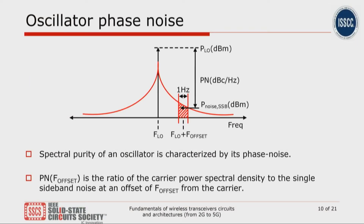One of the key contributors to noise degradation in both the transmit and the receive chain is the oscillator. In an ideal oscillator, the frequency spectrum should look like a single tone at the oscillation frequency, and the zero crossings should appear at an exact time period. However, noise in the oscillator results in random fluctuations in the zero crossings, also known as jitter in the time domain. In the frequency domain, this translates to a spreading in the frequency spectrum of the oscillator. The phase noise is defined at a specific offset frequency from the carrier in units of dBc per Hz — it is the noise energy at an offset frequency compared to the total energy at the carrier frequency.